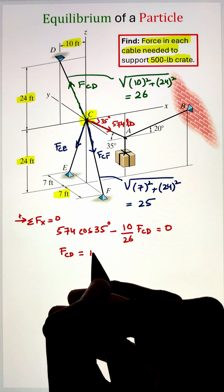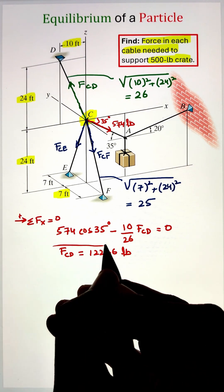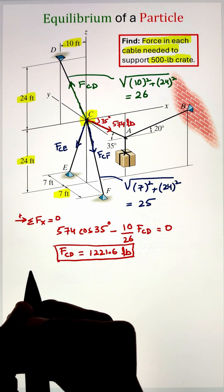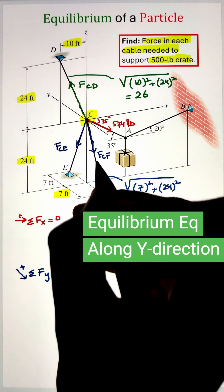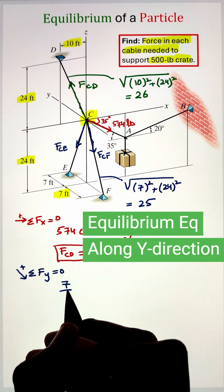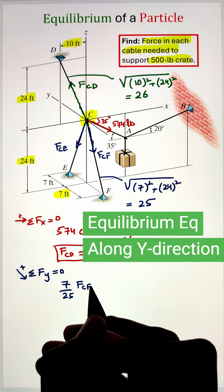Next we can apply the equilibrium condition along the y-direction. Here, only two components of the force FCE and FCF are acting along the positive and negative y-direction. That makes those two forces equal to one another.